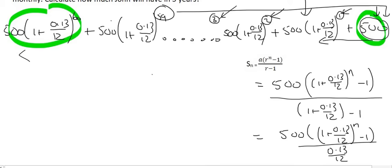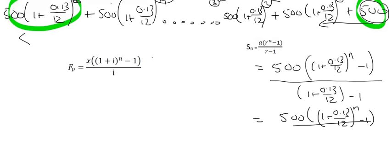And so here we have something called a future value formula. And so the future value formula goes like this, where the future value of your account is equal to your monthly payment, which in this case was 500.